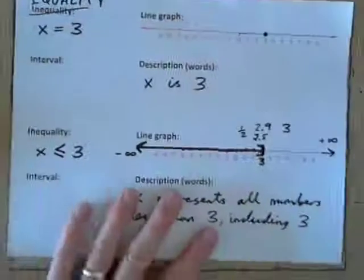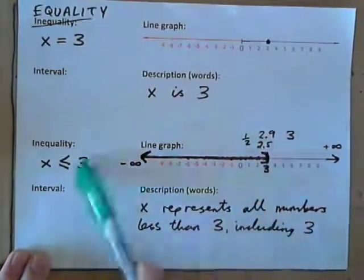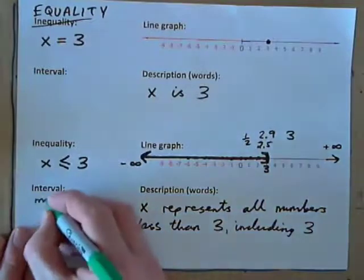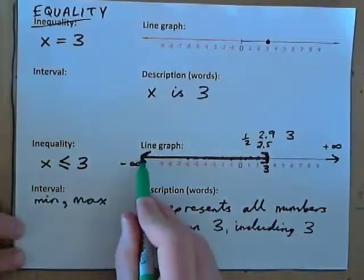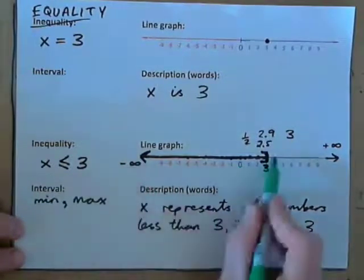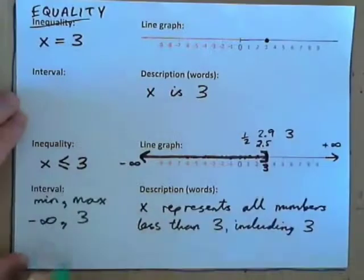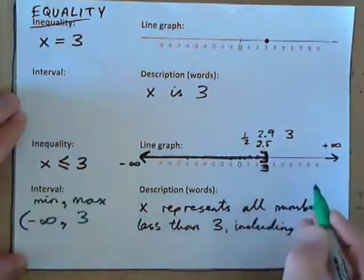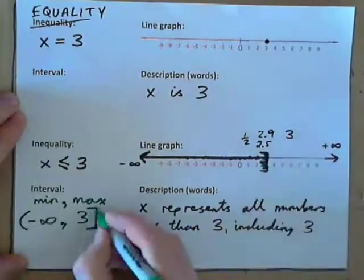Let's find the interval for x ≤ 3. Always write min, comma, max. We have numbers from negative infinity to positive 3. Minimum is negative infinity, maximum is positive 3. Can we include negative infinity? No — put parenthesis. Is 3 included? It's less than or equal to 3, so yes. Just like on the line graph you've got the bracket — this is a bracket.